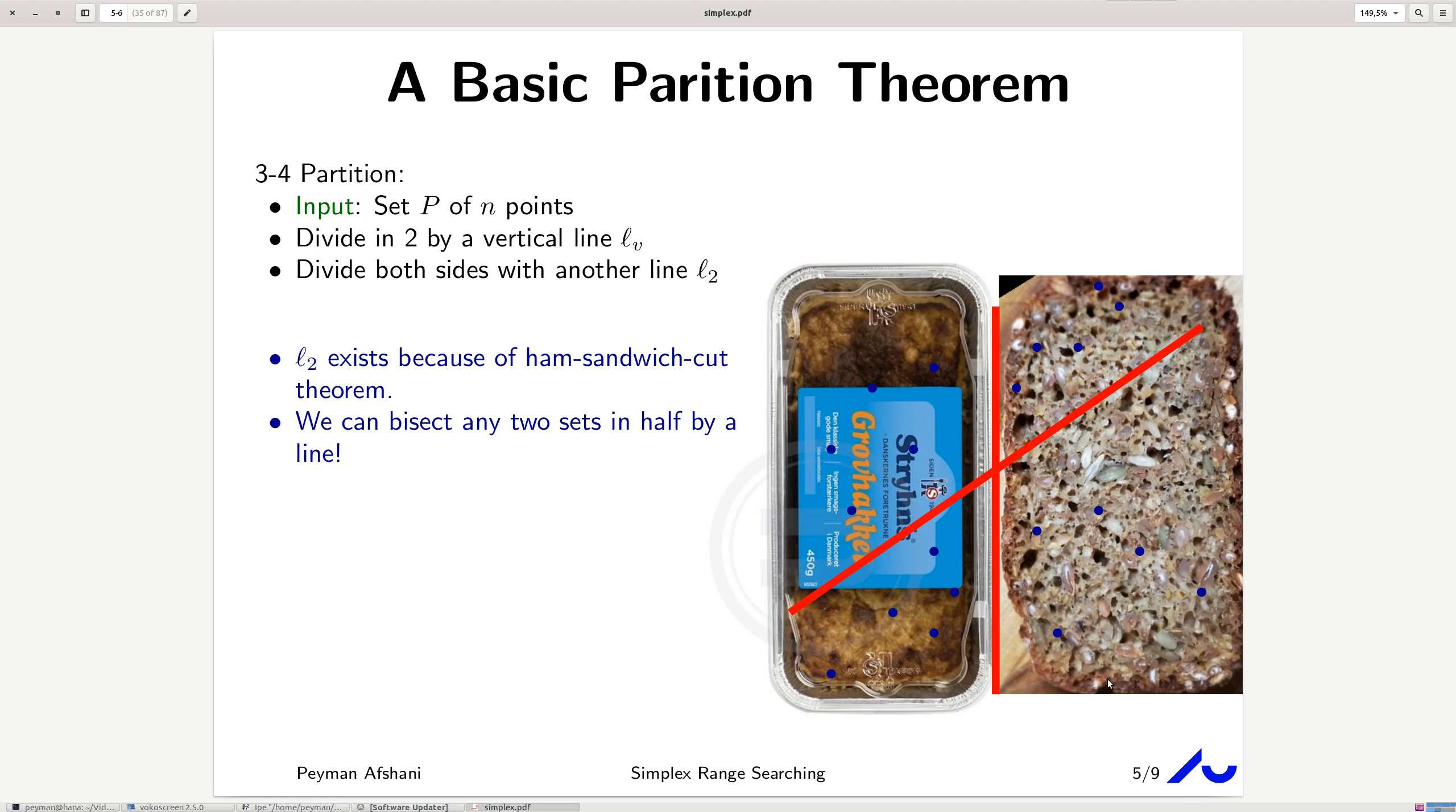Typically, this is expressed as a ham sandwich cut. Imagine that in three-dimensional space, you have a sandwich that is made from ham, bread, and cheese. So, that's three ingredients. Since it's a three-dimensional sandwich, we can cut it with a line or with a knife, with a straight line, in such a way that each half contains half of the cheese, half of the bread, and half of the ham. Of course, in 2D,